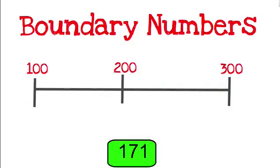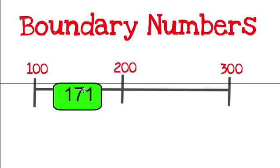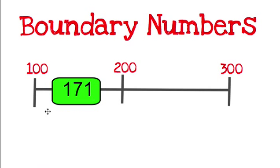With the 100s, it's the same thing. 171 is in between 100 and 200, or 200 and 300. So 171 would be here, and my boundary numbers would be 100 and 200, meaning that 171 is in between 100 and 200.